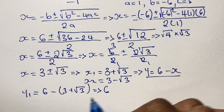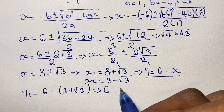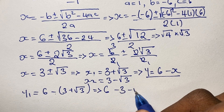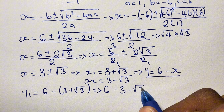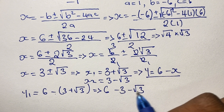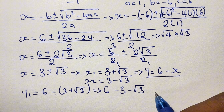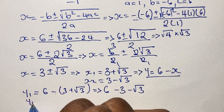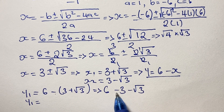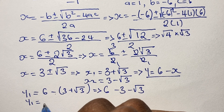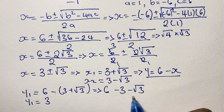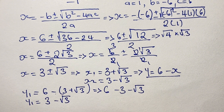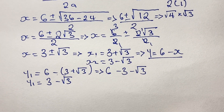Evaluating this: negative 1 times 3 gives us negative 3, and the negative sign changes the positive square root of 3 to negative. So we have y equals 6 minus 3 minus the square root of 3. Since 6 minus 3 is 3, our first solution for y is y₁ equals 3 minus the square root of 3.